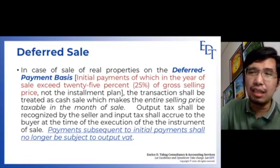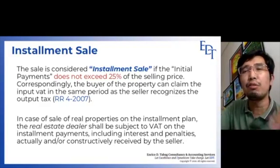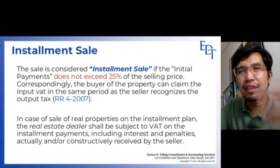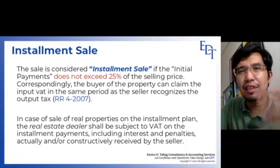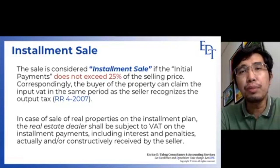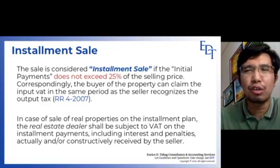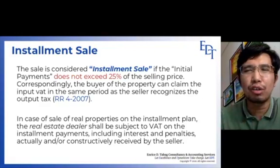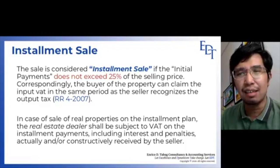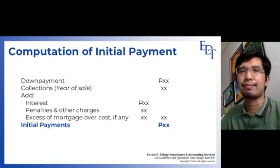If the ratio of initial payment over selling price does not exceed 25%, it qualifies as an installment sale. Under installment sale, the output VAT you report to the BIR corresponds only to your collections. You do not need to report the output VAT on the entire selling price or zonal value right away — you only report corresponding to your collection. This makes classifying the type of sale very crucial, whether it is a deferred sale or installment sale.